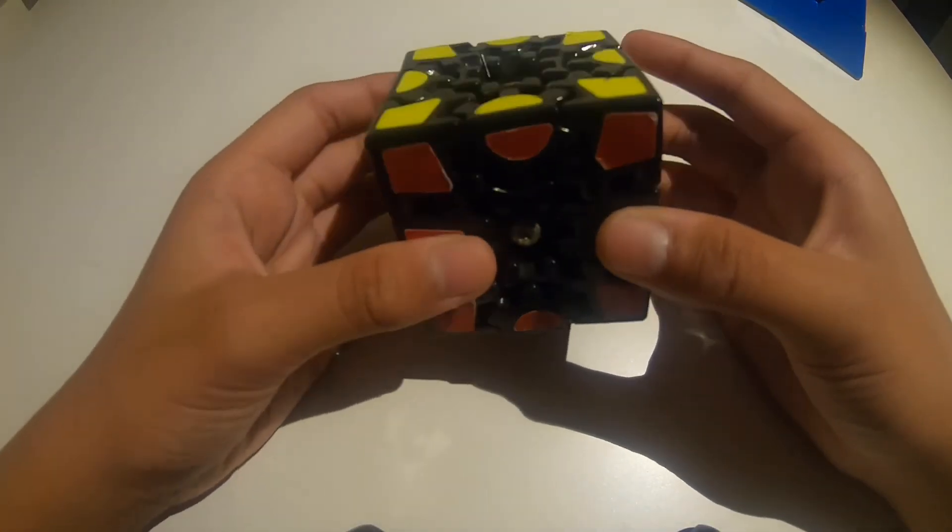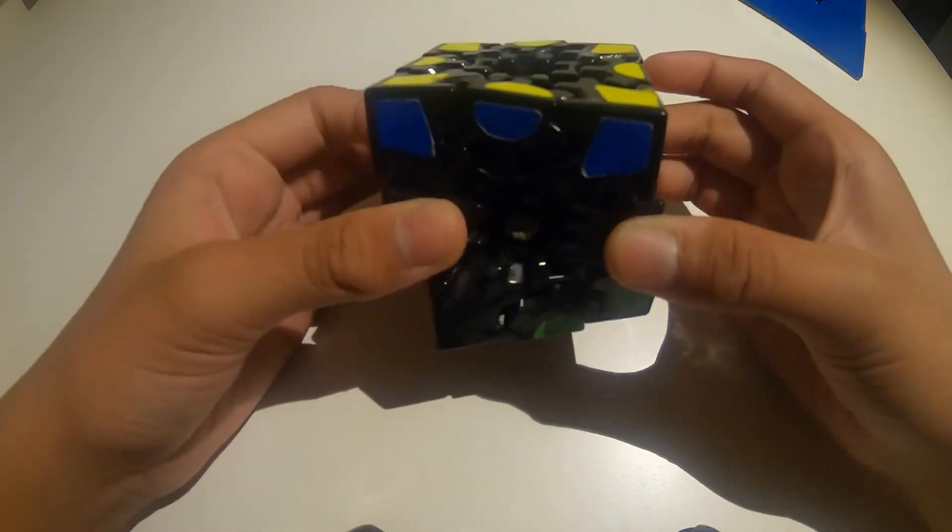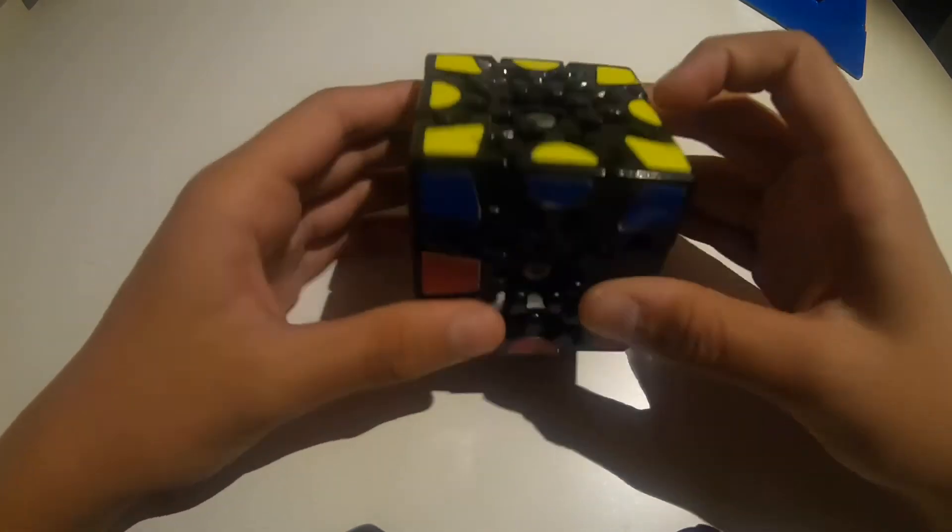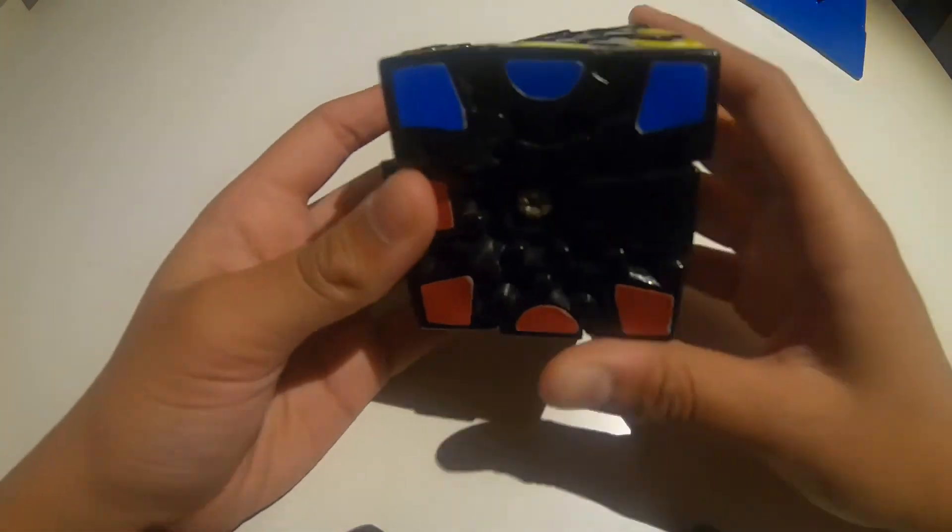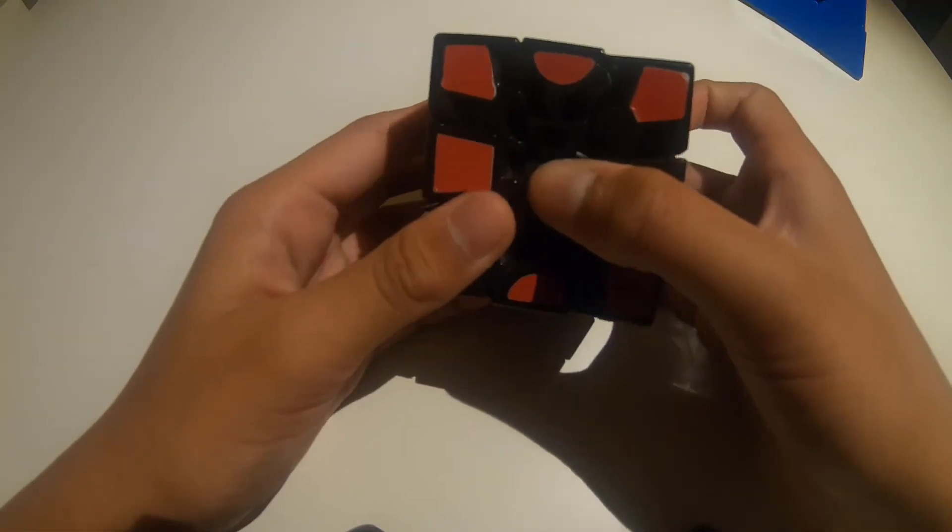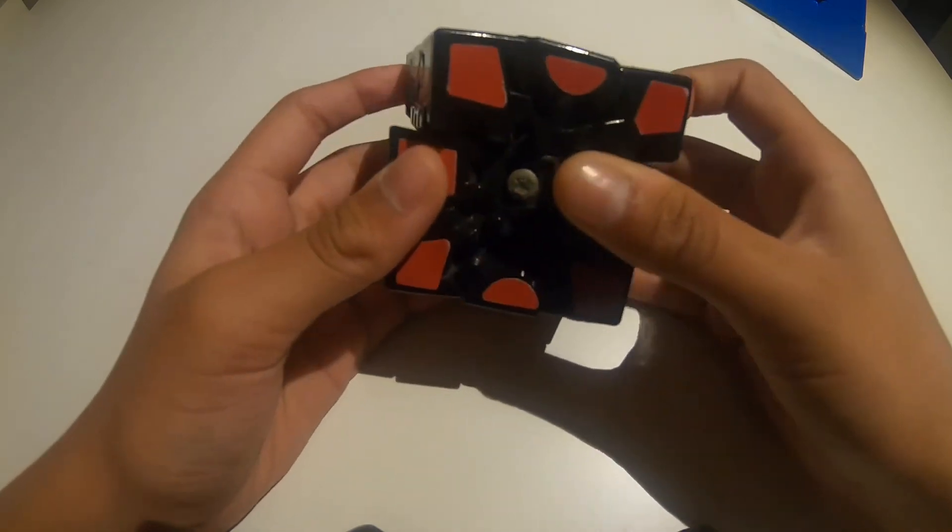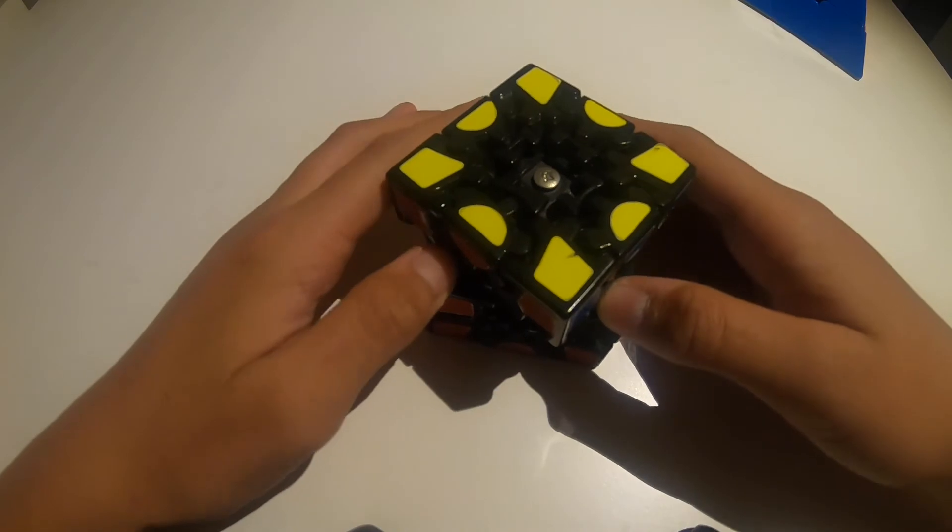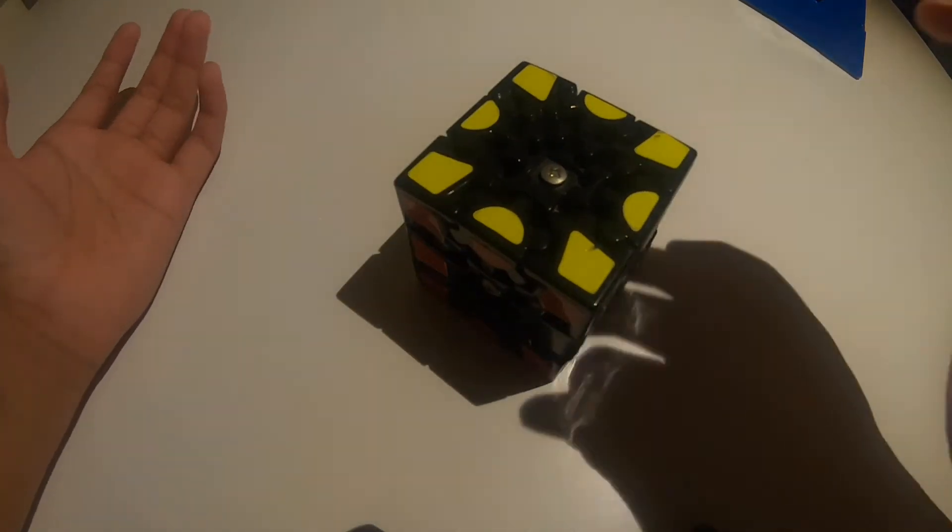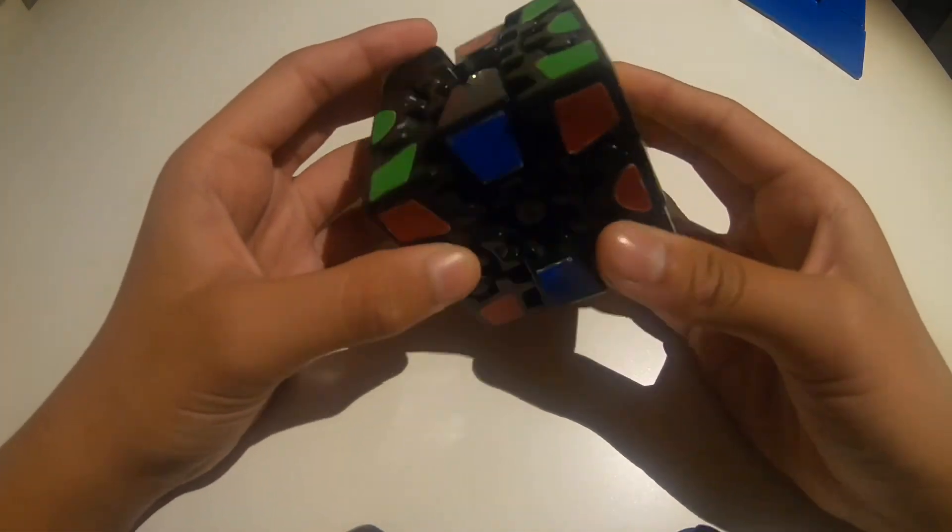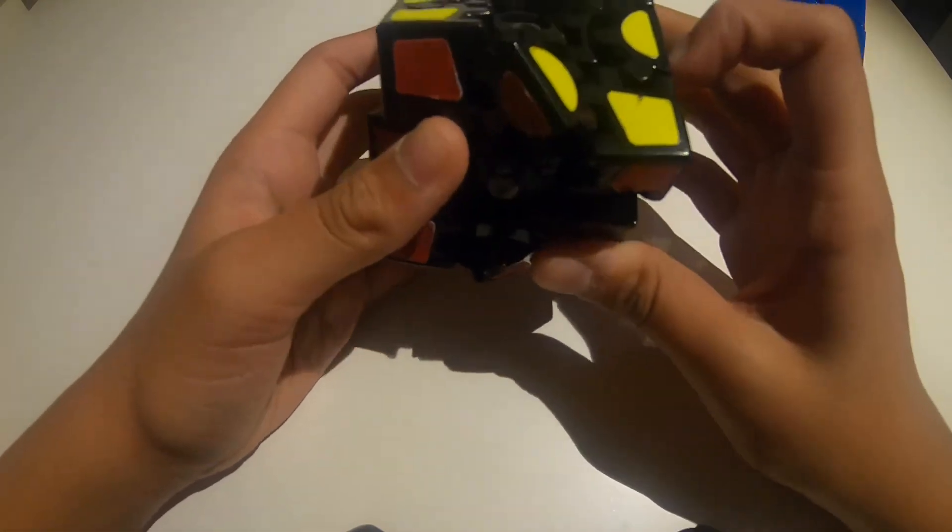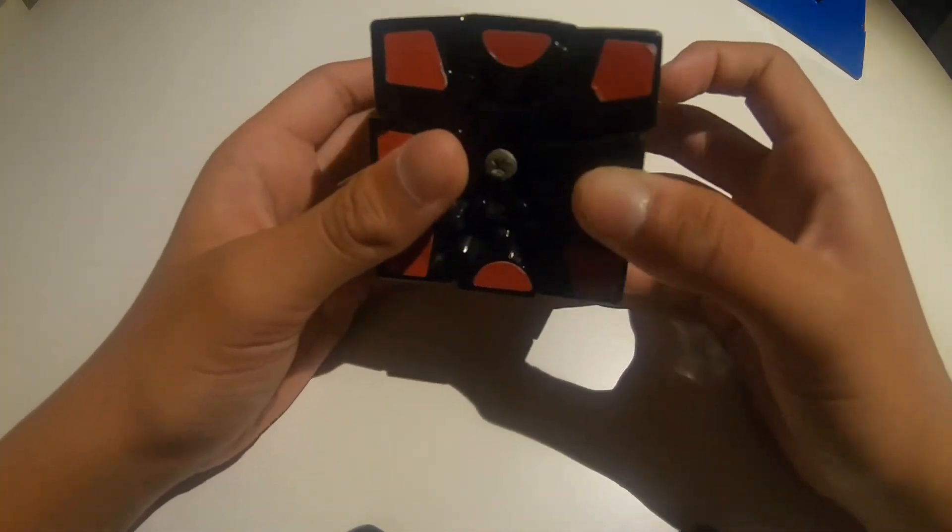But on the GearCube Extreme, the top and bottom layers, they rotate independently. So you can do a 90 degree turn and we can still turn it. This makes it extremely hard. I actually do not know how to solve this. Actually, I do know how to solve most of it, but there's this one step at the end where you have to twist the edges. And there's a reason why I don't know how to do that.